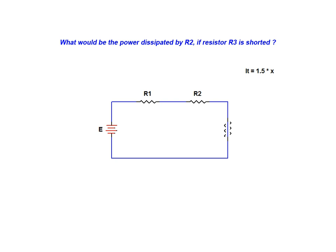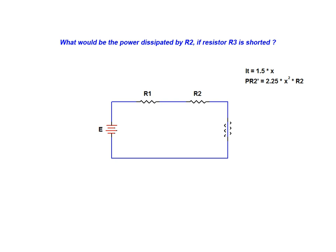As the resistance of R2 is unchanged, the greater current results in a greater value of power being dissipated for resistor R2. It is important to note that when calculating power, the I term is squared. So the resulting power is not only 1.5 times greater than the initial power — it is actually 2.25 times greater than the initial power value.